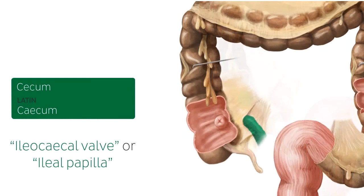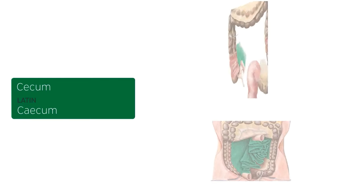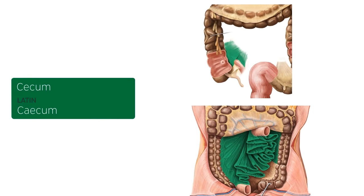In the next image, we can see the terminal portion of the ileum prior to the ileocecal junction. In addition, in the lateral wall of the cecum, we can see this fold of peritoneum, which is part of the mesentery. This large fan-shaped, double-layered fold of peritoneum connects the jejunum and the ileum to the posterior abdominal wall at its inferior end. As you can see in the top right image, it lies at the ileocecal junction.